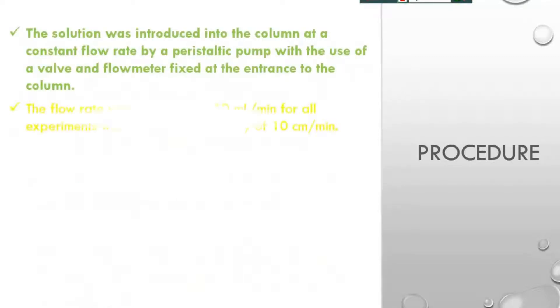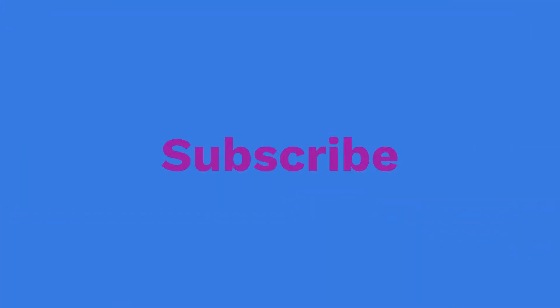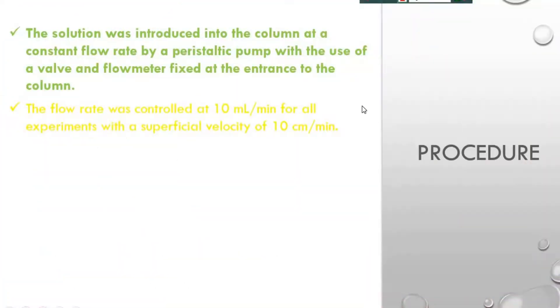Then the solution was introduced into the column at a constant flow rate by a peristaltic pump with the use of a valve and flow meter fixed at the entrance to the column. And the flow rate was controlled at 10 mL per minute for all experiments with a superficial velocity of 10 cm per minute.